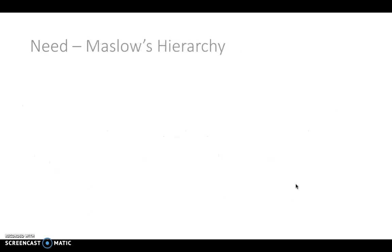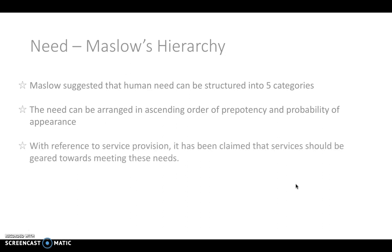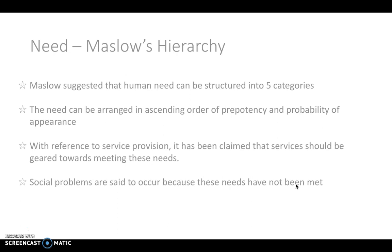Another way of looking at need is through Maslow's hierarchy. Maslow suggested that human need can be structured into five categories, arranged in ascending order of prepotency and probability of appearance in a population. With reference to service provision — which is what population perspective is all about — it's been claimed that services should be geared towards meeting these needs.